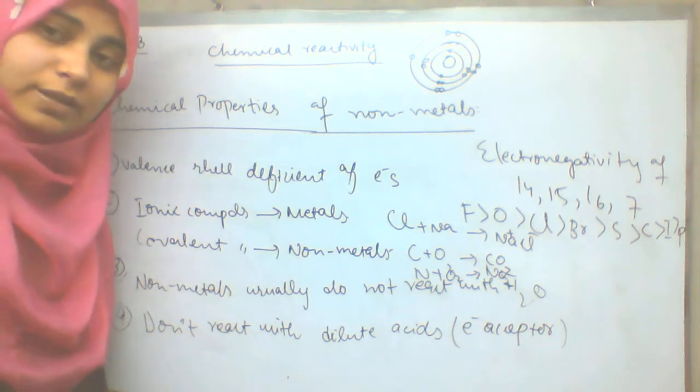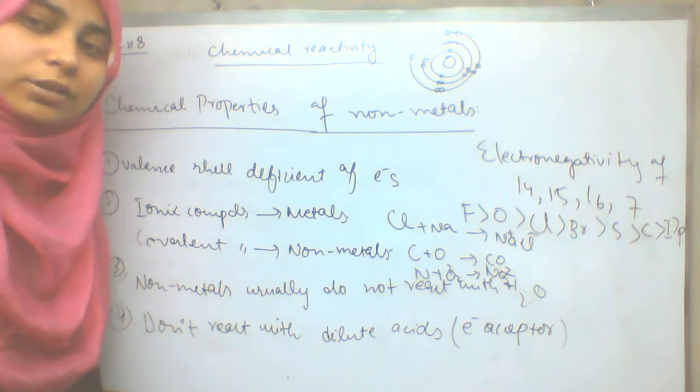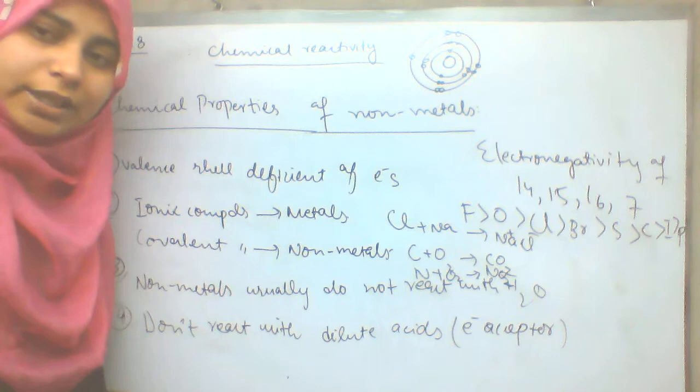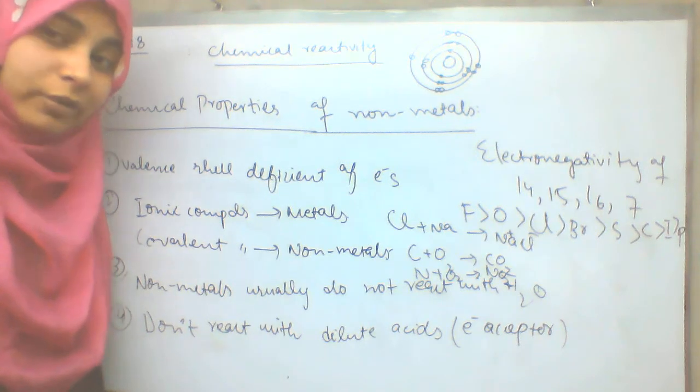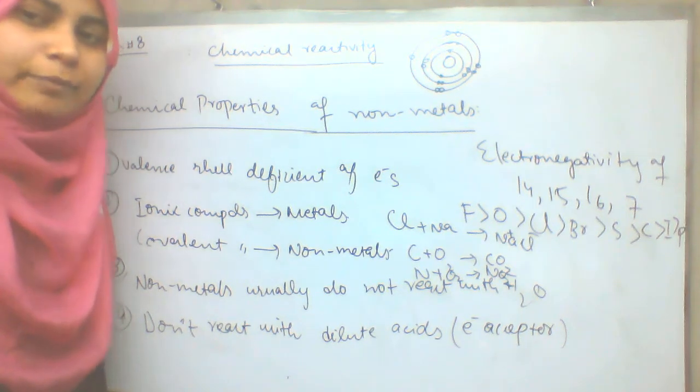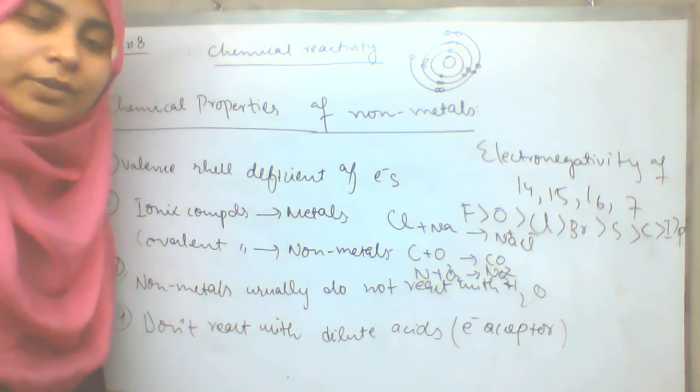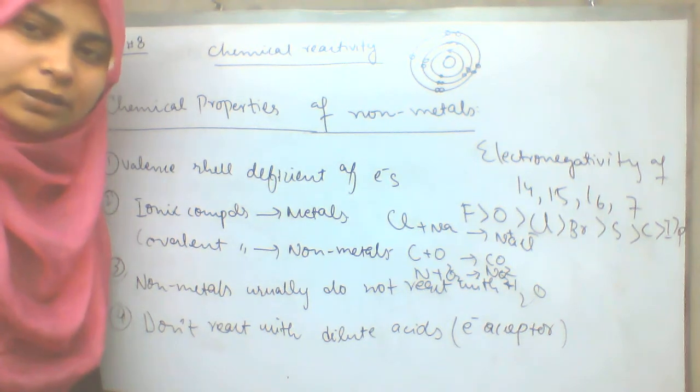The number of shells increases. As the number of shells increases, the shell of electrons is farther, and the power of electron attraction is low, and the electronegativity is low, and the non-metallic character is low.